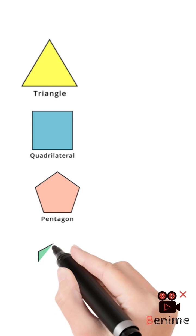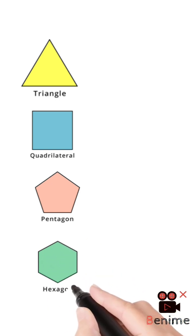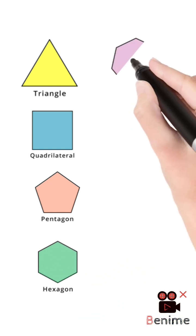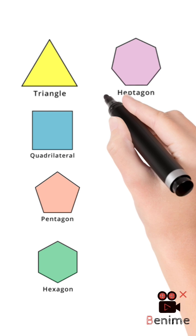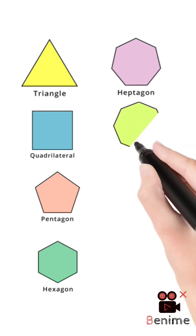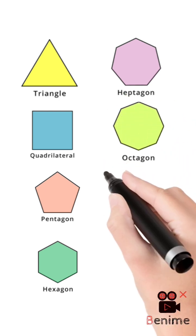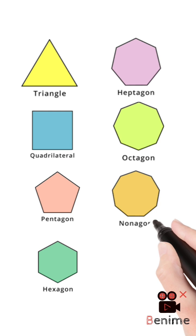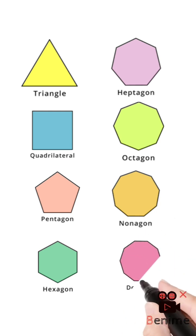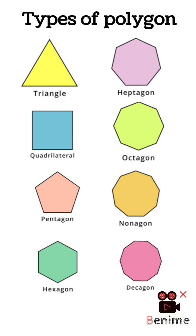If 5 sides, Pentagon. If 6 sides, Hexagon. If 7 sides, Heptagon or Septagon. If 8 sides, Octagon. If 9 sides, Nonagon. If 10 sides, Decagon.